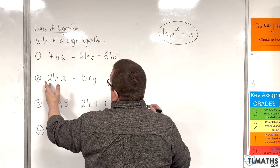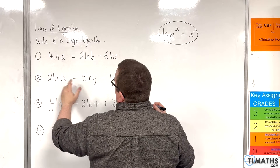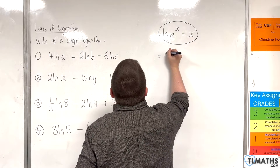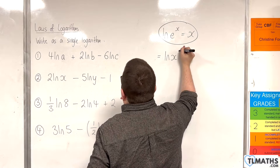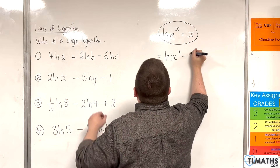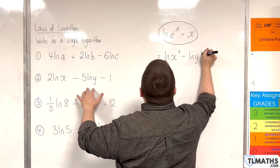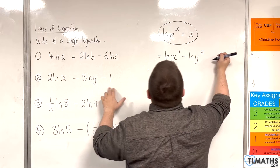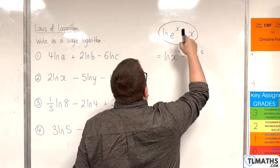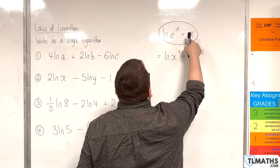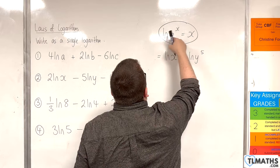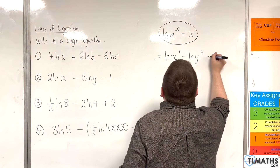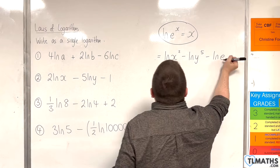First, bring the 2 and the 5 up to the powers, so we can write that as the natural log of x squared, take away the natural log of y to the 5, and then there's that take away 1. Now, using the rule that ln(eˣ) = x, if the constant is 1, we can write take away 1 as take away the natural log of e.